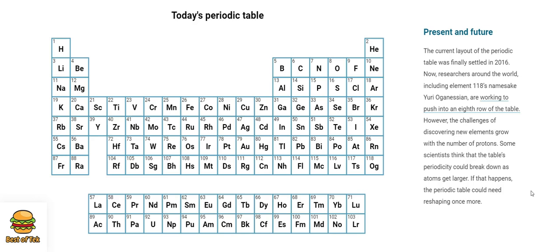Present and future. The current layout of the periodic table was finally settled in 2016. Now, researchers around the world, including Element 118's namesake Yuri Oganesian, are working to push into an eighth row of the table. However, the challenges of discovering new elements grow with the number of protons. Some scientists think that the table's periodicity could break down as atoms get larger. If that happens, the periodic table could need reshaping once more.